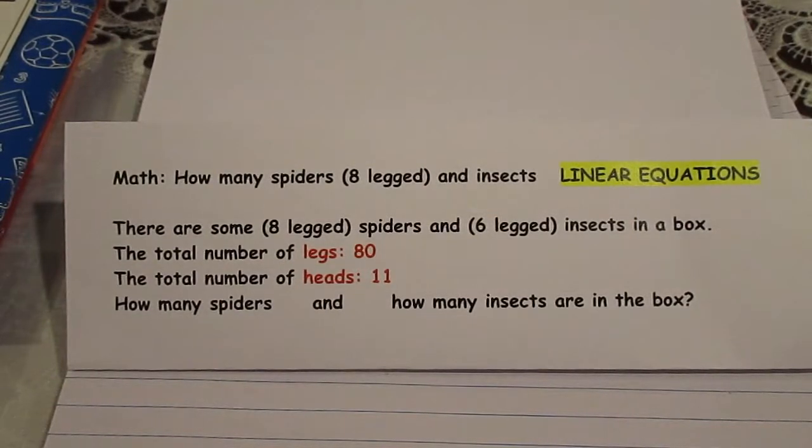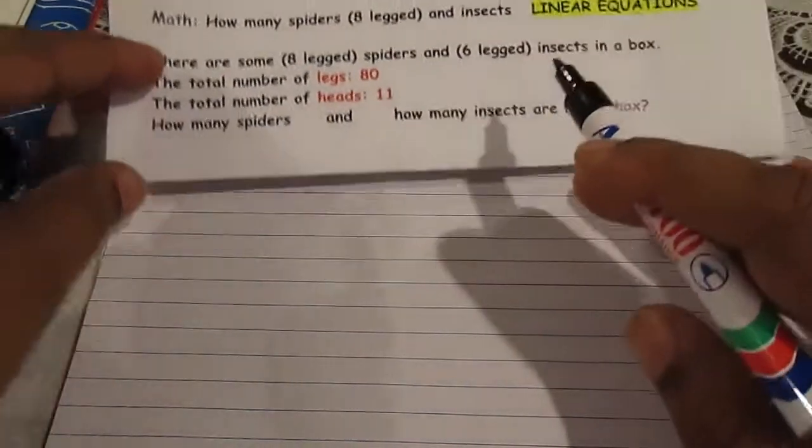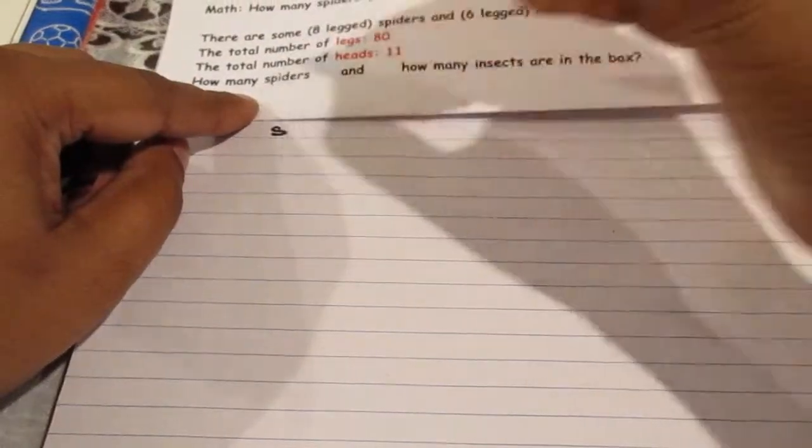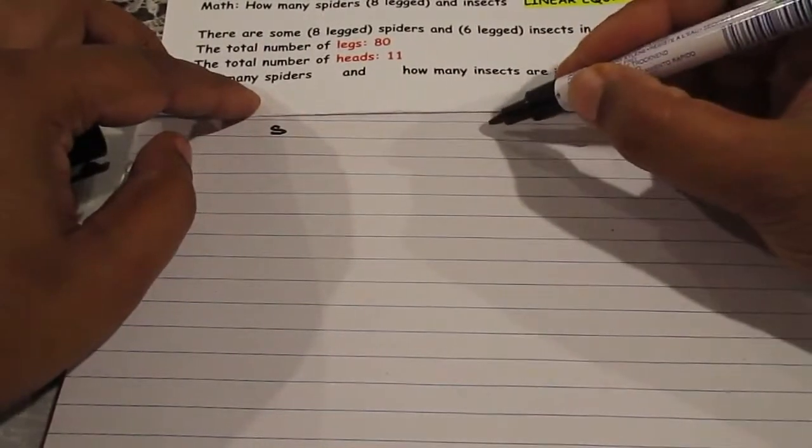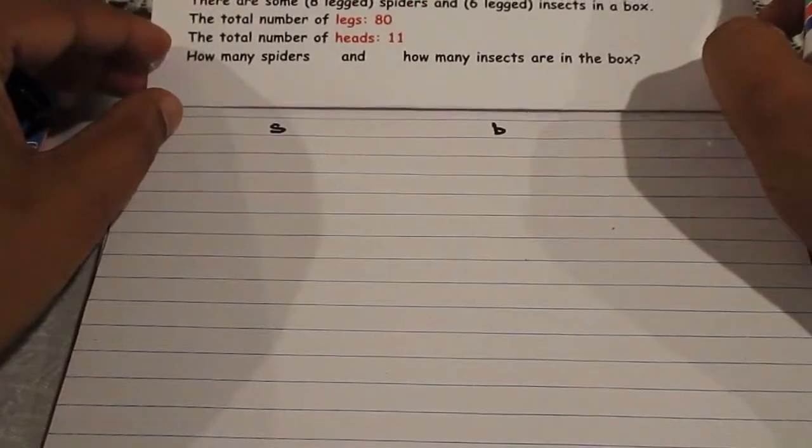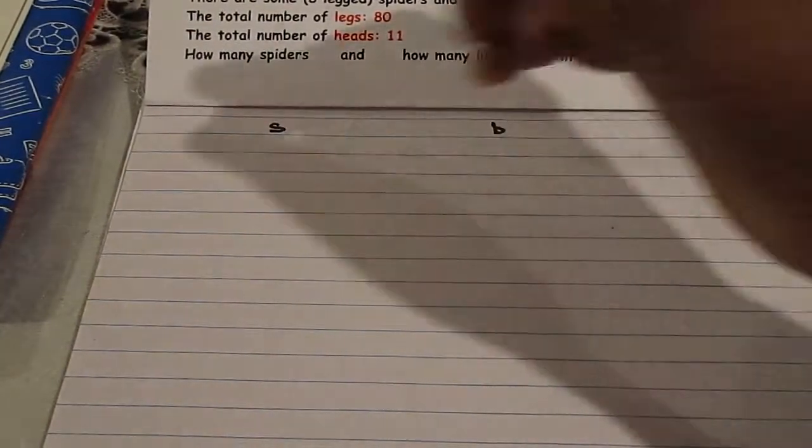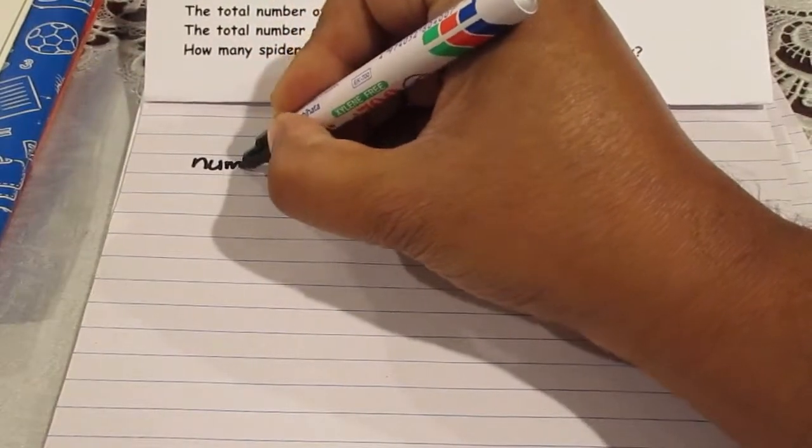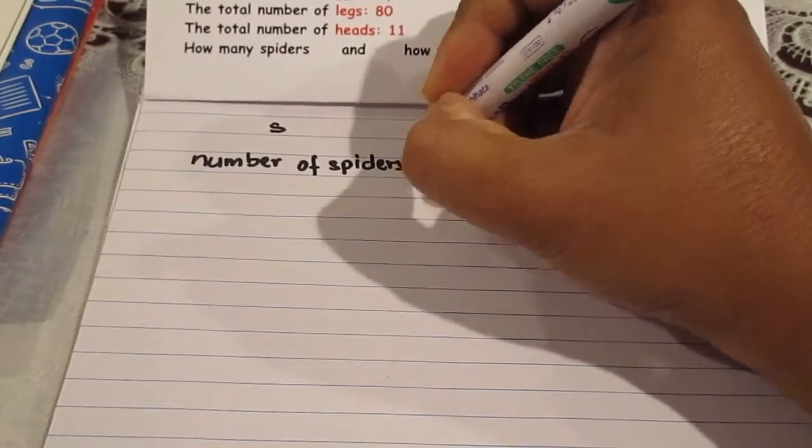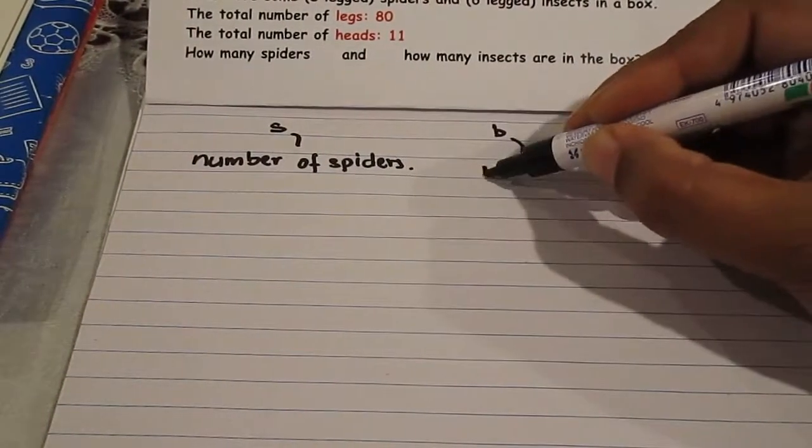So the way we go about this is first we realize that they want us to find two things: how many spiders and how many insects. Let's say the number of spiders is s and the number of insects is b for bugs. Now there's one thing that's very important to note here. It's not the spiders that are s. What is s? S is the number of spiders and b is the number of insects.